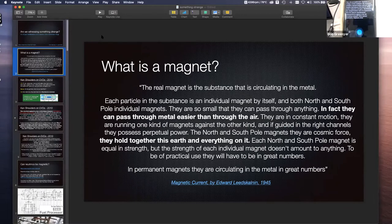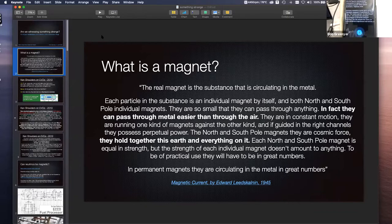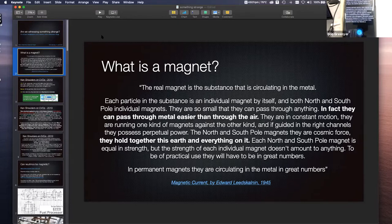First, I wanted to give a quote from Edward Leeds Galen from 1949. What is a magnet? The real magnet is the substance that is circulating in the metal. Each particle in the substance is an individual magnet by itself, and are both North and South Pole individual magnets. They are so small that they can pass through anything. In fact, they can pass through the metal easier than through air. They are in constant motion, running one kind of magnets against the other, and if guided in the right channels, they possess perpetual power. The North and South Pole magnets are the cosmic force. They hold together this Earth and everything in it.